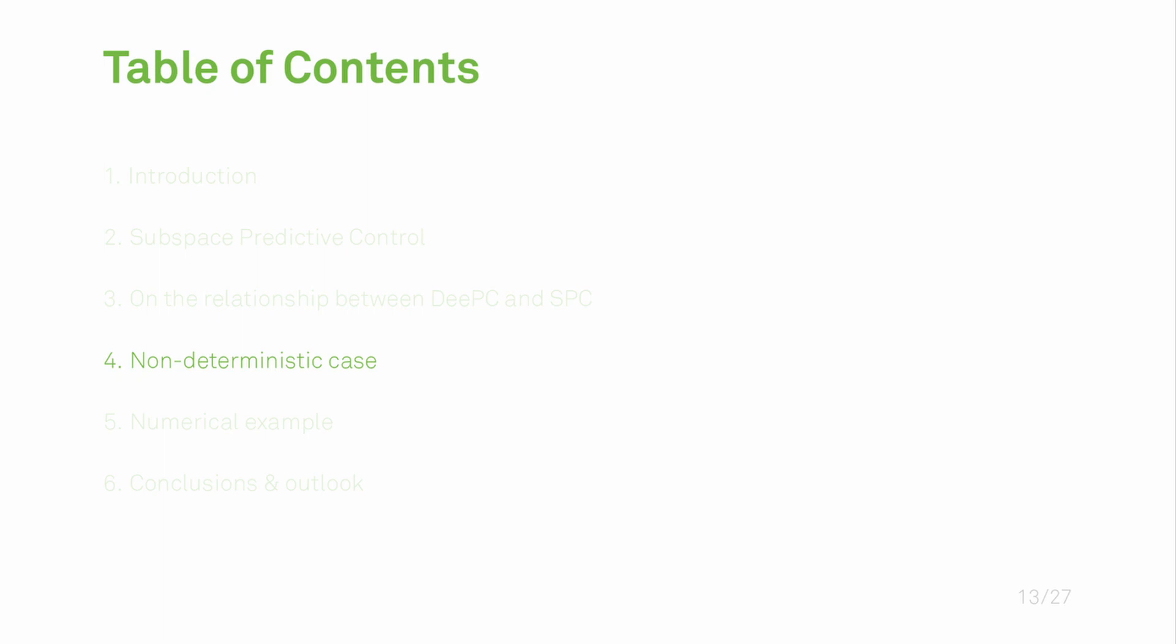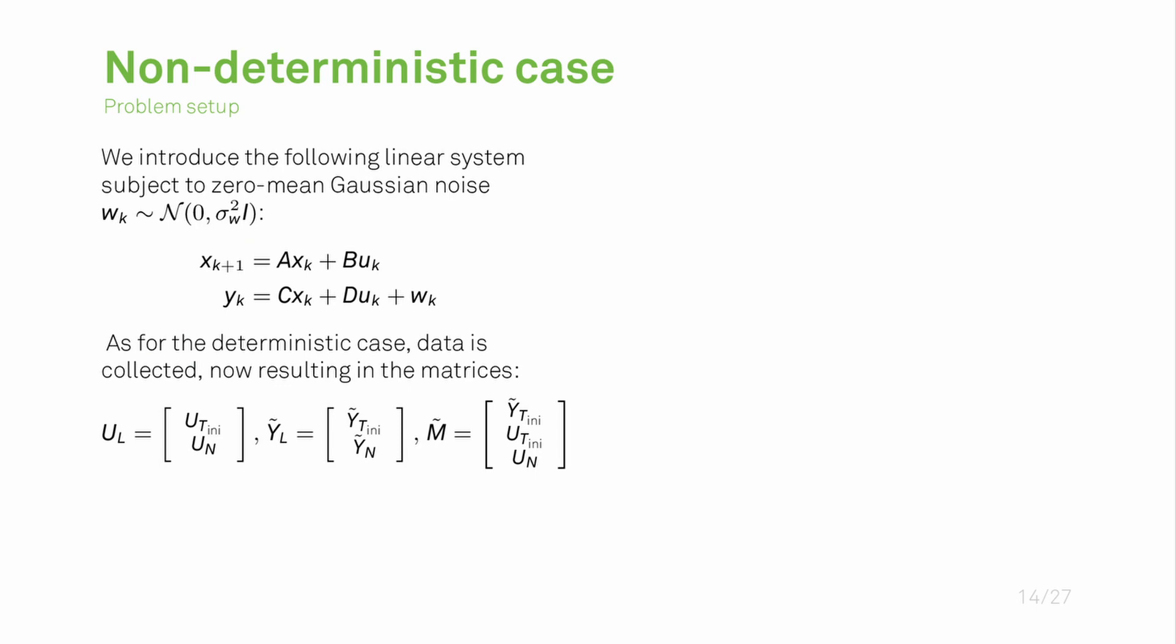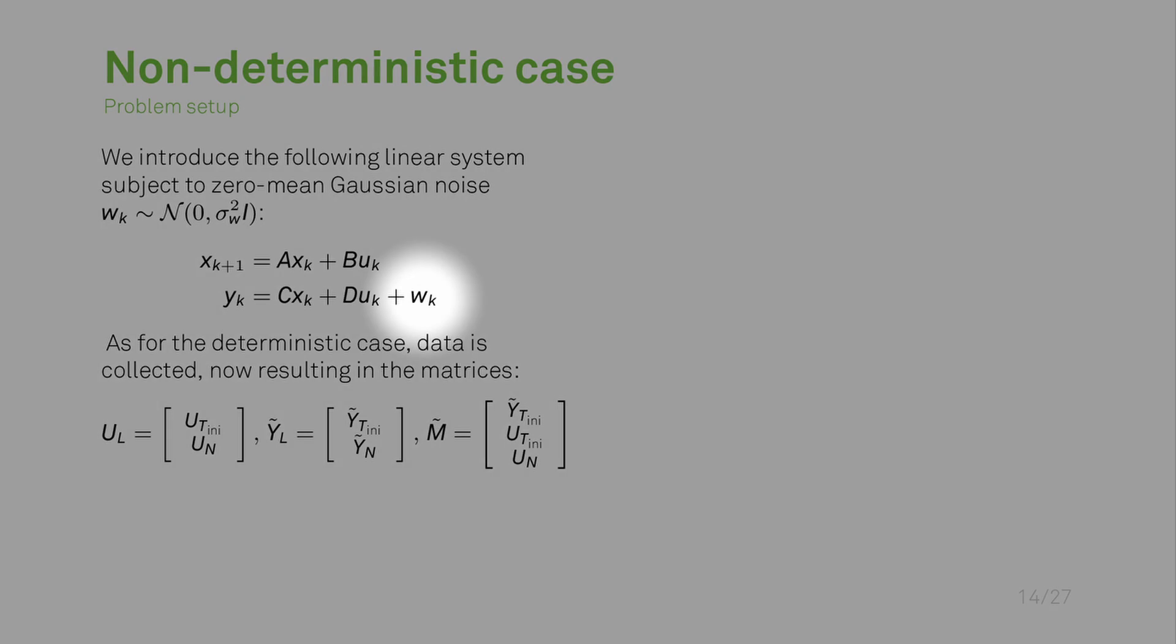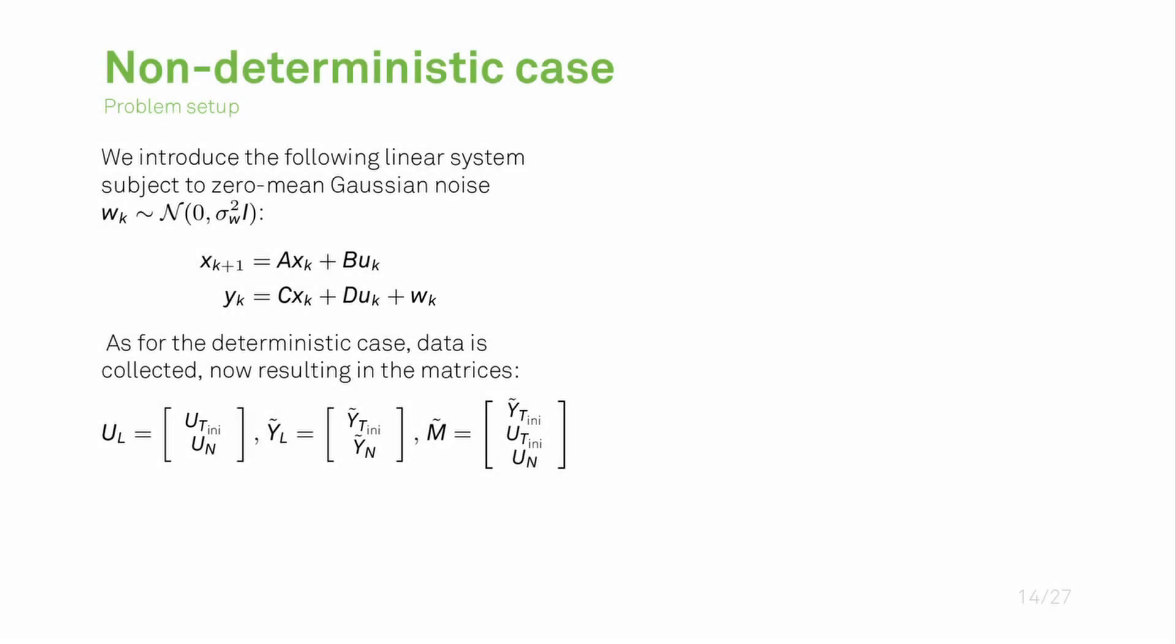This brings me to the next section of this presentation: the non-deterministic case. The non-deterministic case is the same setup but we now have an additive output noise which we assume to be zero mean Gaussian noise. This means that all the data matrices which we are collecting are also noise disturbed and we denote this by adding this tilde symbol above the matrices.